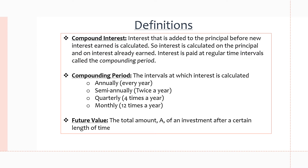First off, let's go over some definitions. Compound interest is interest added to the principal before new interest earned is calculated. This means that interest is calculated on the principal, but also on the interest already earned. In comparison to simple interest where we only took the fraction off of the principal value, now each compounding period we're taking a fraction of the principal value and interest that's already been earned.